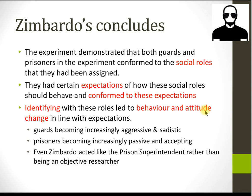The findings — with specifics in your guide notes — demonstrated that both guards and prisoners in the experiment conformed to expected social roles. They had certain expectations of how people in these roles should behave and they conformed to them. They identified with those roles, and their behavior and attitudes changed. Guards became increasingly aggressive and sadistic; prisoners became increasingly passive and accepting. Even Zimbardo himself acted like the prison superintendent, identifying with his role to some extent.